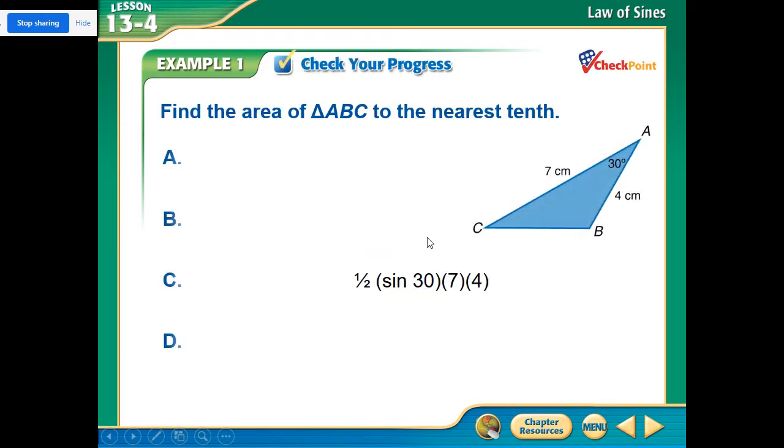Let's do another one. Here we have seven and four with 30 in between. So it's the sine of 30 with seven and four, one half of that. And we actually get seven centimeters squared.